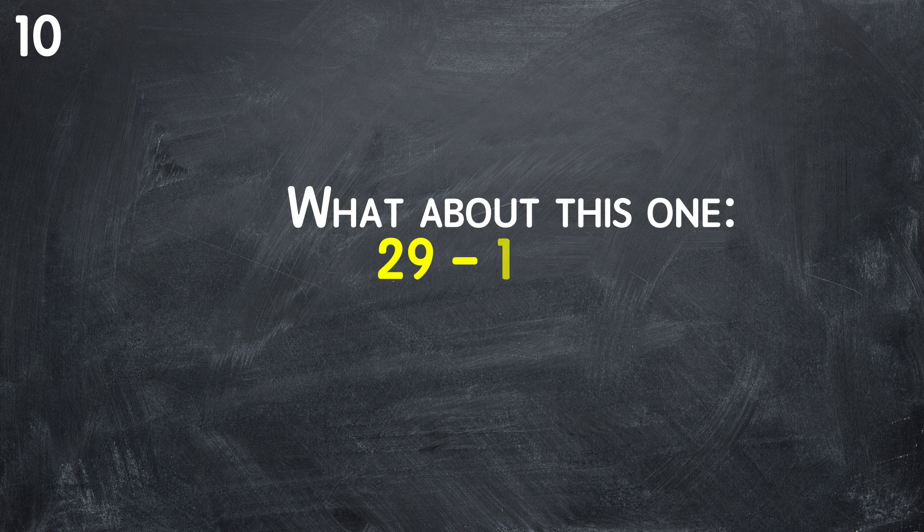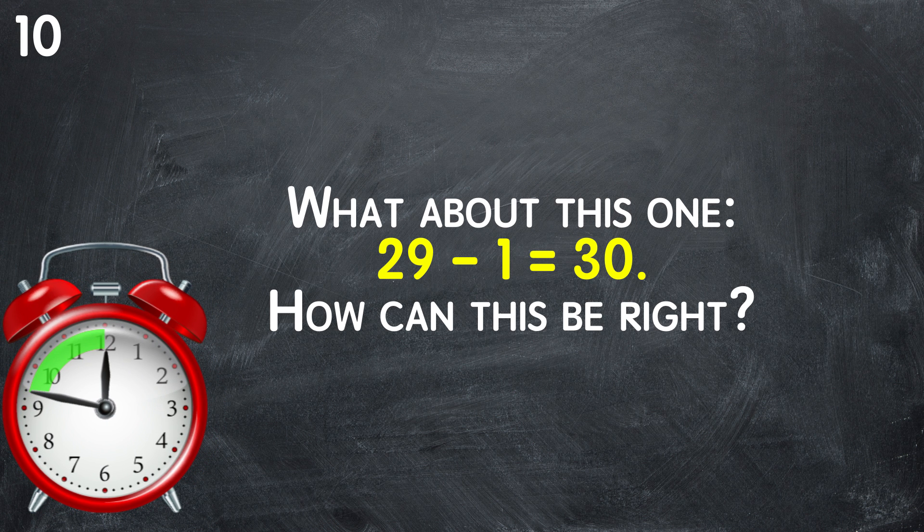10. What about this one? 29 minus 1 equals 30. How can this be right? Don't hurry. You have enough time to mull it over.